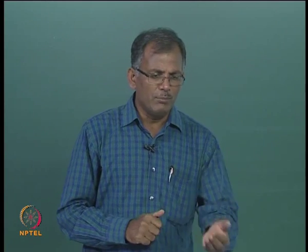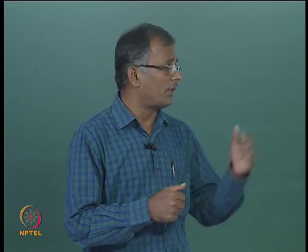Whereas when you come to a very large structure and still assume the same idea, if it is too big, the error induced is so large that there is no meaning in doing the calculation based on the Morrison formula, because the difference could be as much as 50 percent. In such a case, it will not be possible to accept. That is the situation where the structure is so large that we would like to look for an alternative solution.